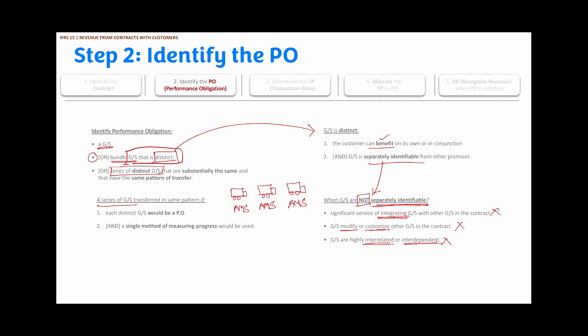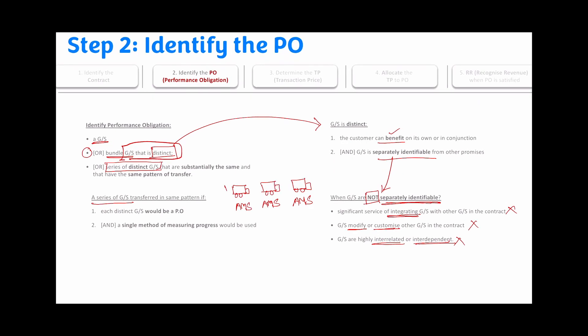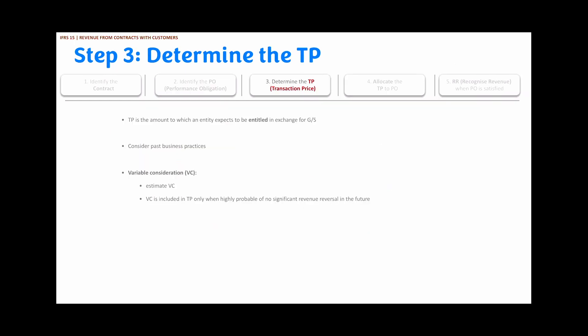The next step is to determine the transaction price. A transaction price is the amount an entity expects to collect when a performance obligation is satisfied — it is the amount the entity expects to be entitled to when goods and services are exchanged. An entity will consider past business practices; for example, if an entity always gave a 5% discount on the recommended retail price, then only 95% of the recommended retail price will be recognized as the transaction price.